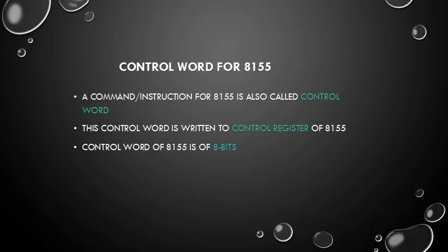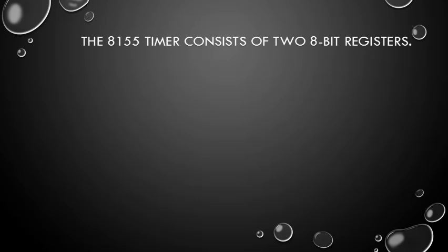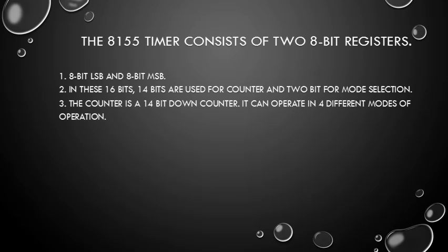Control word for 8155: a command or instruction for 8155 is also called a control word. This control word is written to the control register of 8155 and is 8 bits wide. The 8155 timer consists of two 8-bit registers — LSB and MSB. In these 16 bits, 14 bits are used for the counter and two bits for mode selection. The counter is a 14-bit down counter.